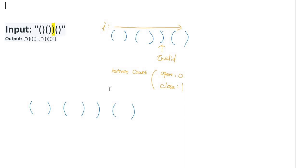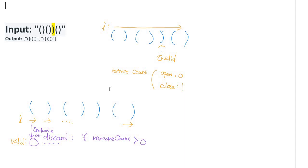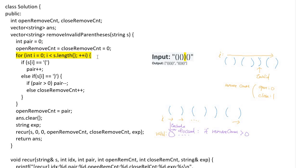This is called backtracking. To get all possible combinations using the recursive function, we increase the index i to iterate the parenthesis string from beginning to end. For each parenthesis we can choose two options: include or discard. The discard option is restricted by checking that the remove count is over zero. After discarding, we decrease the remove count. Remove count is managed for close and open parentheses respectively. With this condition we can reduce the search tree dramatically to get the result much faster.